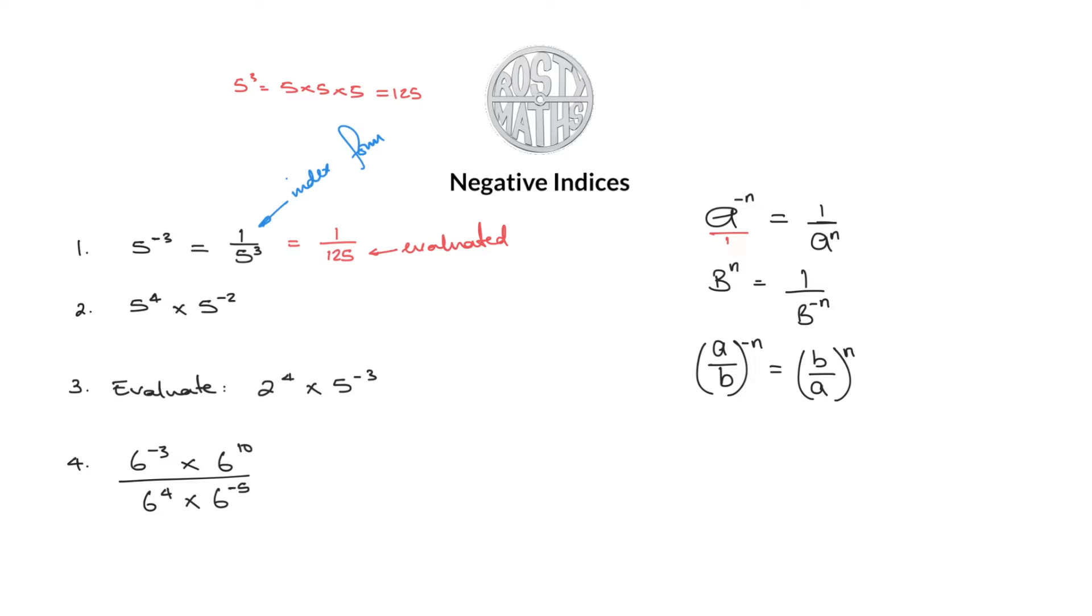So here now we have got a situation where two indices are multiplying. Now you've clearly watched my last video on the laws of indices, but now this follows law number one. So all I'm going to do is rewrite the base. So that becomes five there and add the powers. Four add negative two. This becomes five to the power four take away two, which becomes five square.